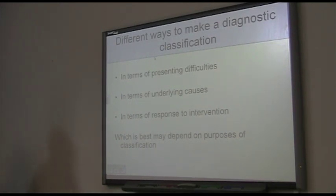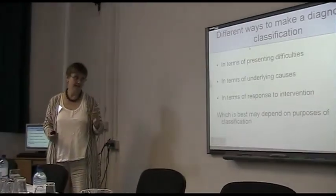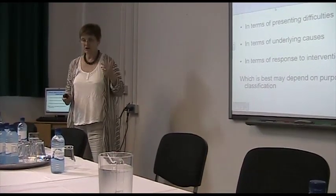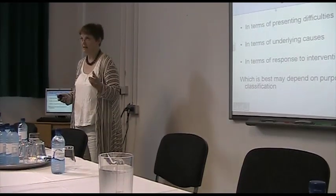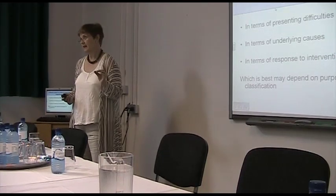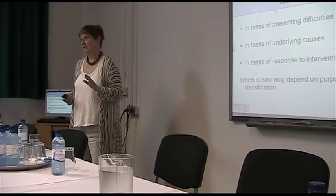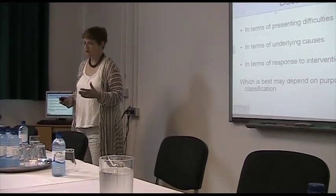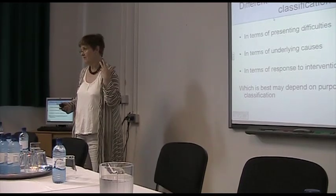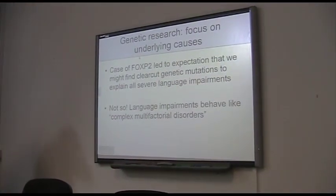In the medical model, the gold standard for coming up with diagnostic categories is thought to be making a diagnosis in terms of underlying causes, which is where potentially genetics comes in. And then there's a third interesting option, used in literature on reading disabilities: using response to intervention to make a diagnosis. But what I really want to argue is that the one you want to use really depends on why you're doing this classification — and the underlying causes approach is not going to be useful for identifying and categorising children who might be allocated speech-language therapy or admission to a special school.